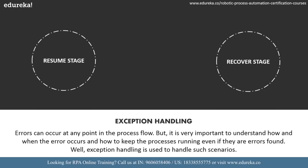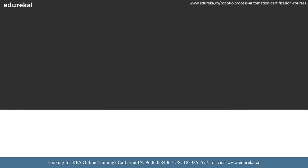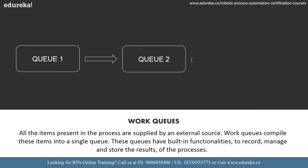Exception handling — errors can occur at any point in the process workflow, but it's very important to understand how and when the error occurs and how to keep the processes running even if there are any errors found. Exception handling is used to handle these scenarios in Blue Prism. You can handle exceptions with the recover and the resume stages.